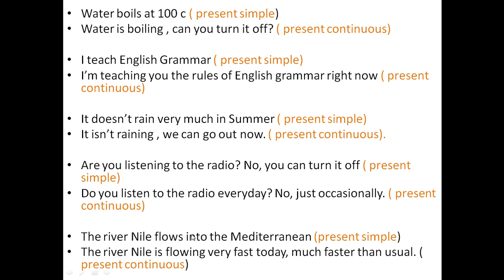'The River Nile flows into the Mediterranean' — this is present simple because it is a fact, something that is always true about the River Nile. I don't say 'the River Nile is flowing into the Mediterranean.' However, 'the River Nile is flowing very fast today, much faster than usual' — this is present continuous. Here I'm indicating that only today it is flowing very fast — this is not a permanent situation, only temporary, so I use the present continuous.